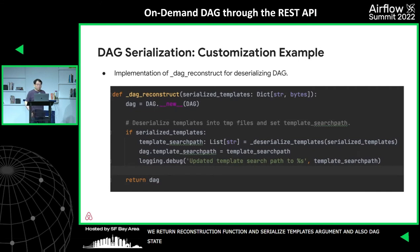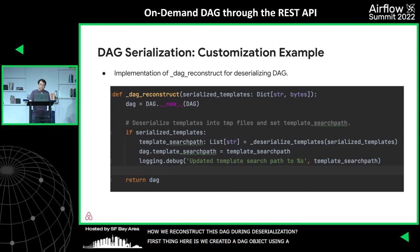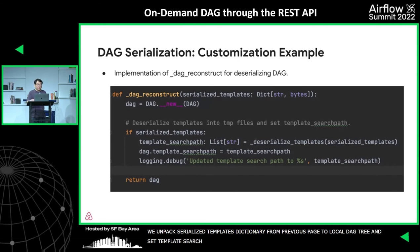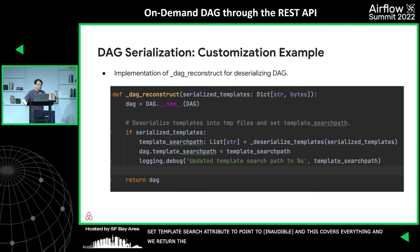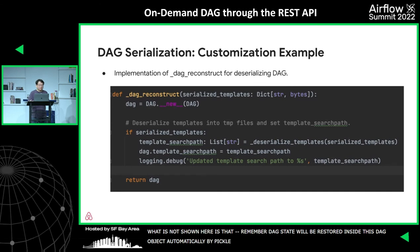For reconstruction during deserialization, in dag_reconstruct we create the DAG object using the magic __new__ constructor, unpack the serialized templates dictionary to a local directory, and set the template search path attribute to point to this local directory, recovering everything. We return the DAG object back. The DAG state is then restored automatically by the Pickle framework, so we don't have to do anything extra there.